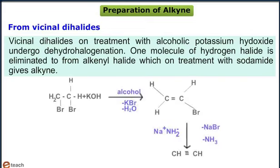For example, a vicinal dibromide in presence of alcoholic KOH gives an alkenyl bromide, which in presence of sodium amide (NaNH2) gives acetylene.